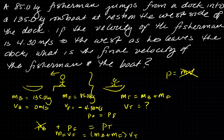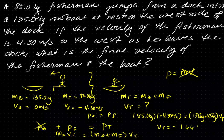Plugging numbers in: 85 kilograms times negative 4.3 meters per second equals 135 kilograms plus 85 kilograms times V total. So V total becomes negative 1.66 meters per second. Since it's negative, the boat and the fisherman are going towards the west.